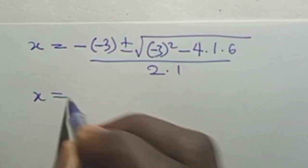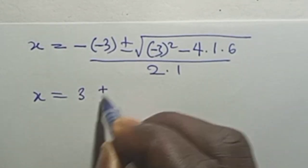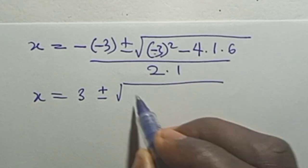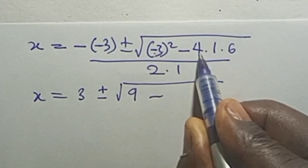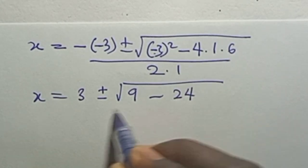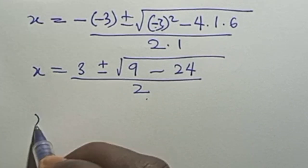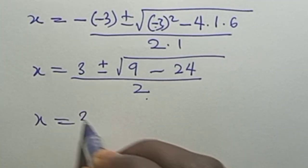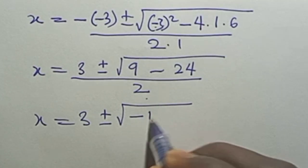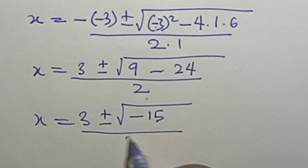Simplifying: s equals 3 plus or minus square root of (9 minus 24), all over 2. That gives s equals 3 plus or minus square root of minus 15, all over 2.